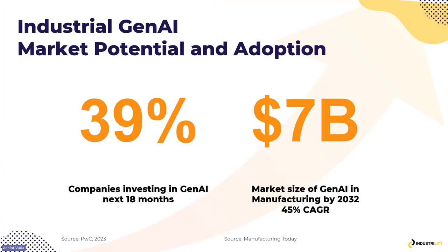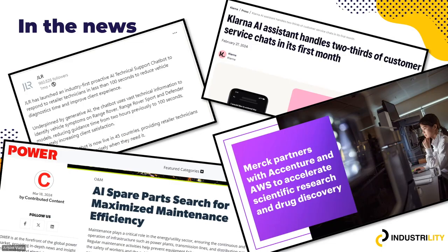This growth about Gen AI is not just us talking about it. More than 39% of companies are investing in Gen AI in the next 18 months, according to a PWC survey. This industry is going to be $7 billion, growing at a massive pace of 45% over the next 10 years. There are some amazing companies which have already delivered fantastic use cases in the market. JLR — Jaguar Land Rover — delivers fantastic luxury cars.